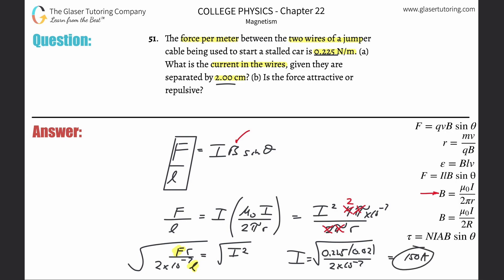Is the force attractive or repulsive? It is repulsive. The way the cables work is, you know, it goes in one direction, goes through the car's battery, then it comes out the other. And so anytime that they're oppositely facing, they're going to be repulsive. Why is that the case? Went through it in detail in number 50.